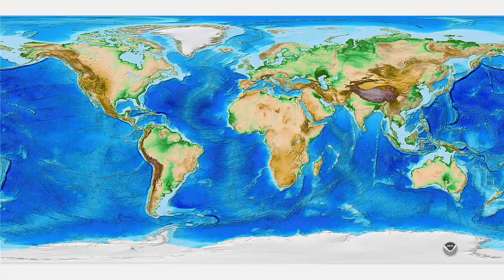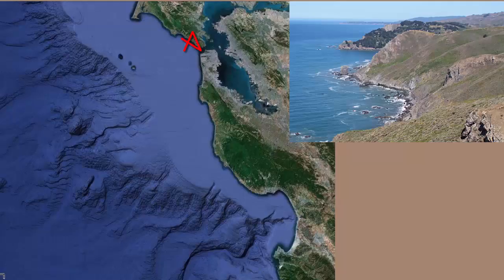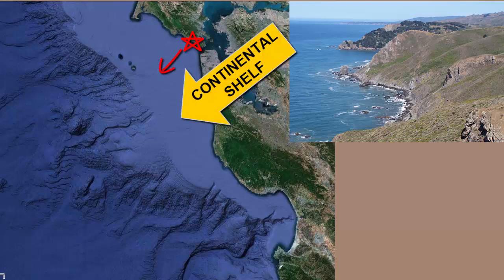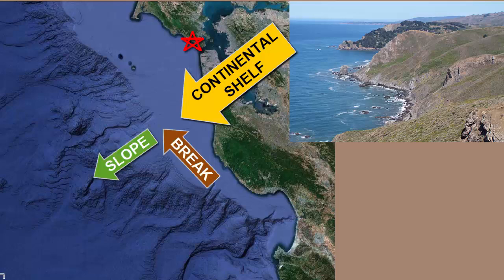So where to start our seafloor explorations? Let's begin at the coast, where humans interact most commonly and directly with the oceans. Moving across the flat and shallow continental shelf, we reach the edge or break before falling down the slope to the base of the deep sea floor below, or abyssal plain.